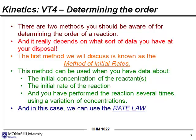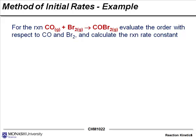In this case we use the rate laws. For the reaction where carbon monoxide reacts with bromine gas to form COBr2, evaluate the order with respect to both reagents and calculate the reaction rate constant. There are a couple of questions: determine the order with respect to each reactant, and calculate the rate constant.